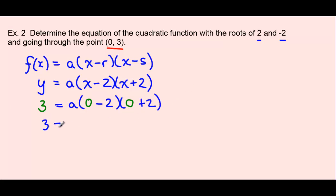So 3 equals a(0 minus 2 is negative 2)(0 plus 2 is positive 2). And what we have here are two numbers that are multiplying together with an a. So 3 is going to equal negative 2 times 2 is negative 4 times a.